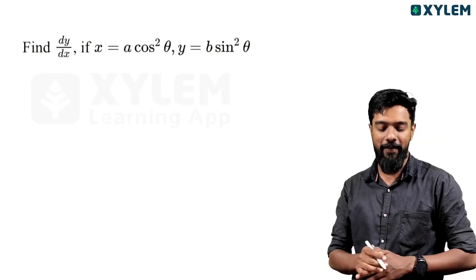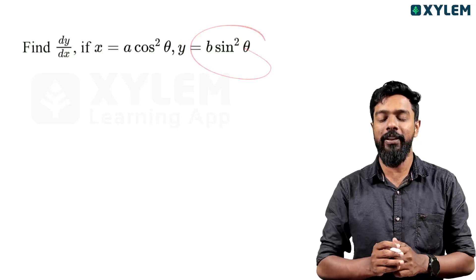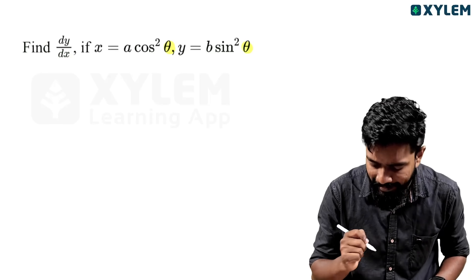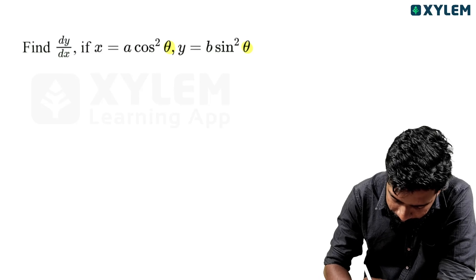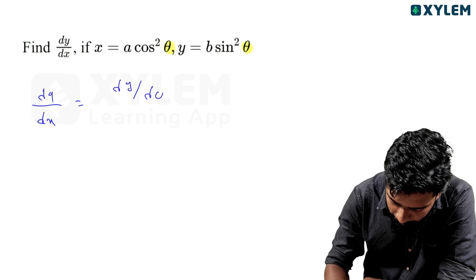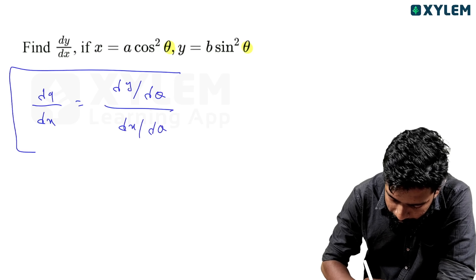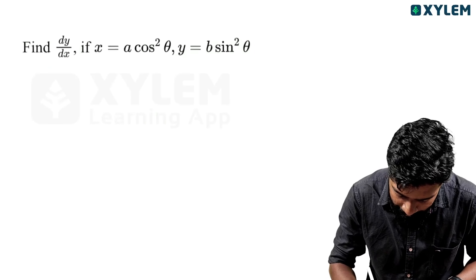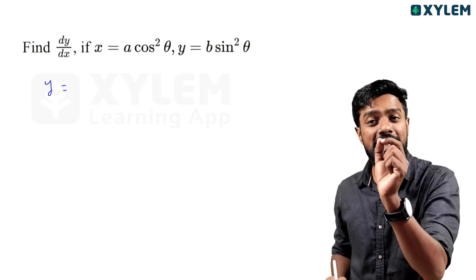Third example: x equals a cosθ, y equals b sin²θ. Find dy by dx. Since θ is a parameter, dy by dx equals dy by dθ divided by dx by dθ. For dy by dθ: y equals b sin²θ, so we need the derivative of b sin²θ.